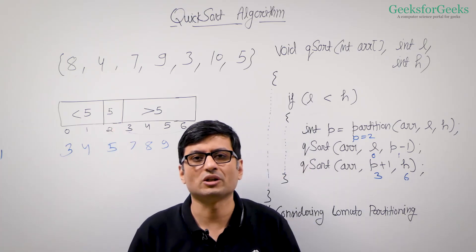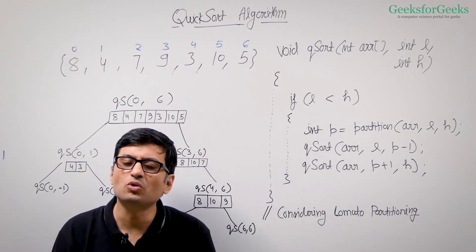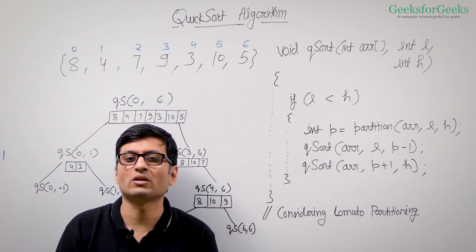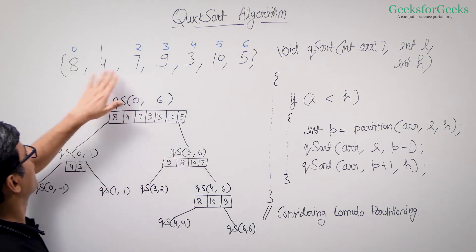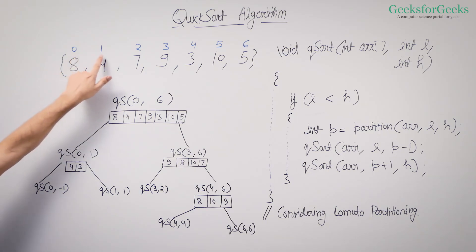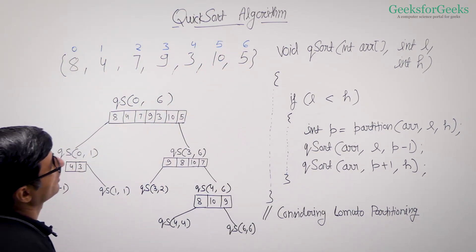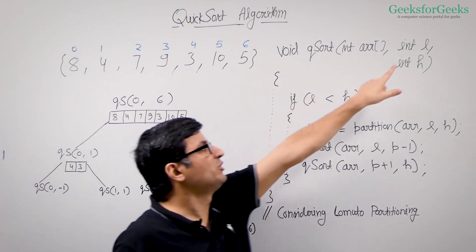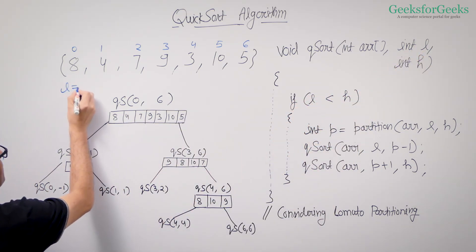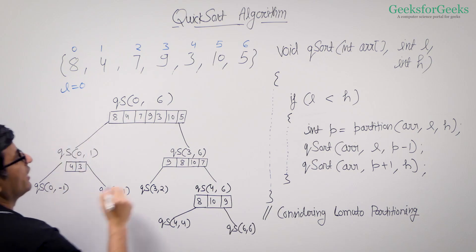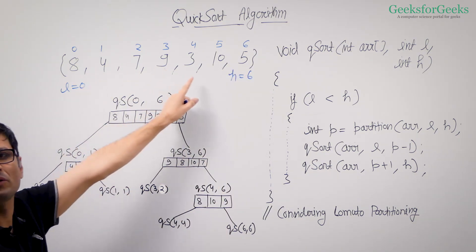That's the idea of quicksort with Lomuto partition. Let us now do a step-by-step run of the quicksort algorithm. Say we have this array with indexes 0, 1, 2, 3, 4, 5, 6. The L value initially passed is 0 and the H value is the last index, 6. We want to sort the whole array.